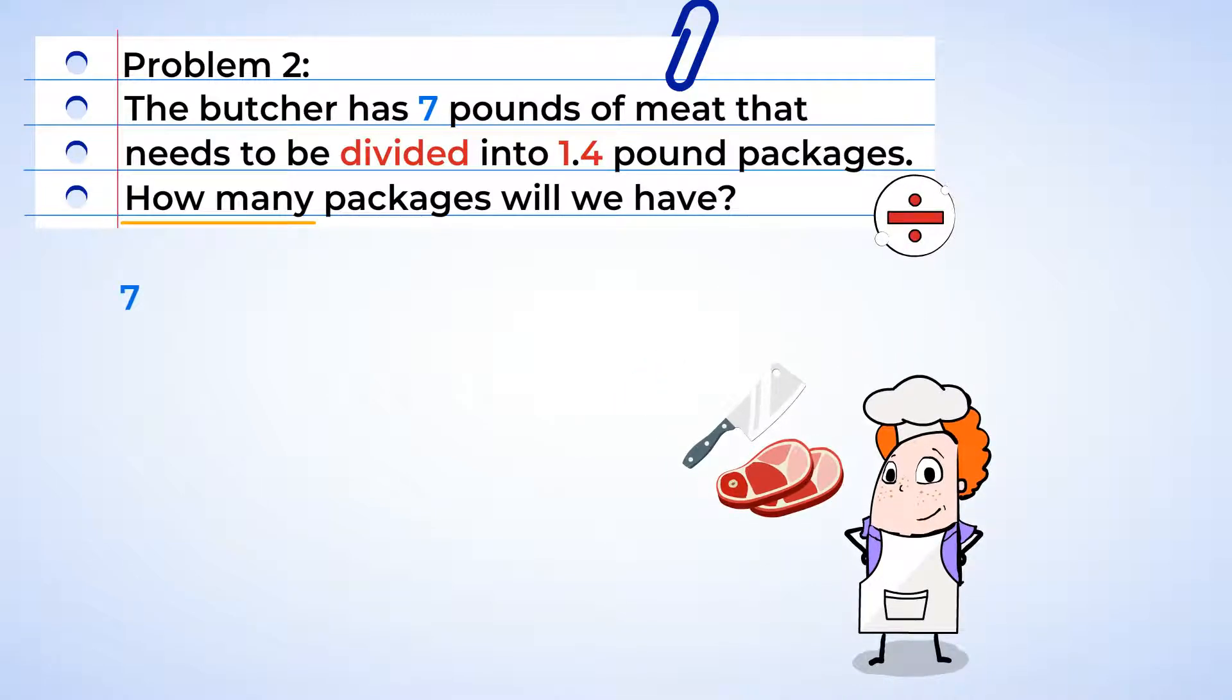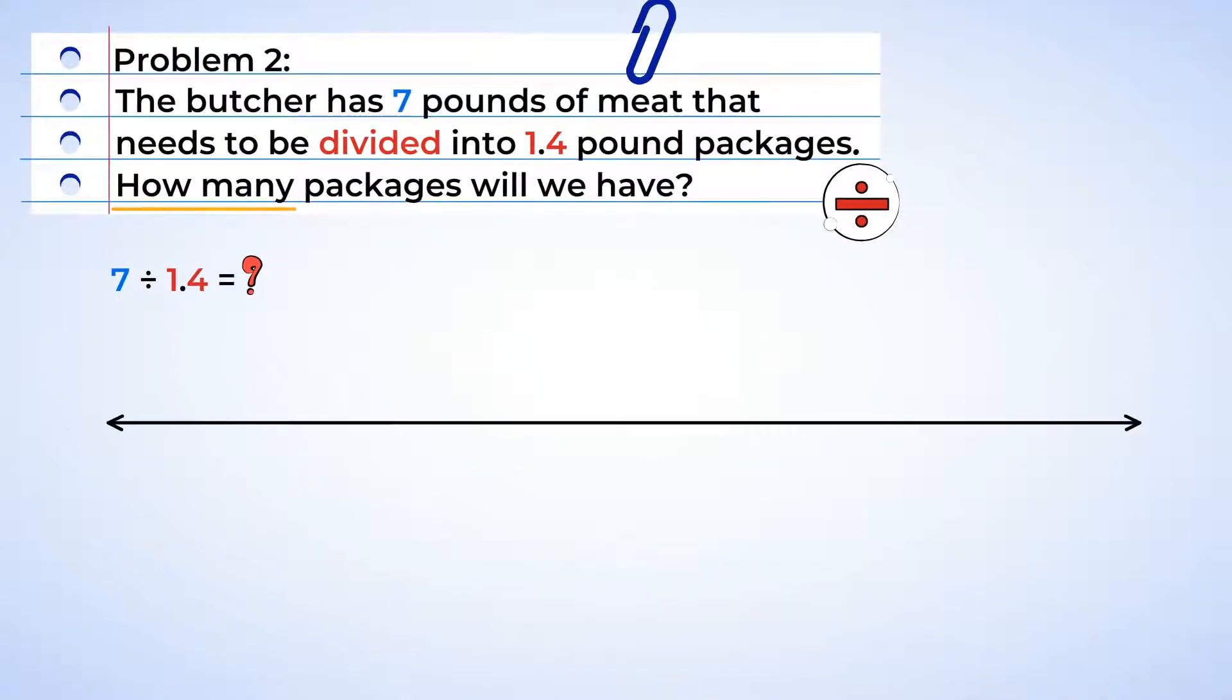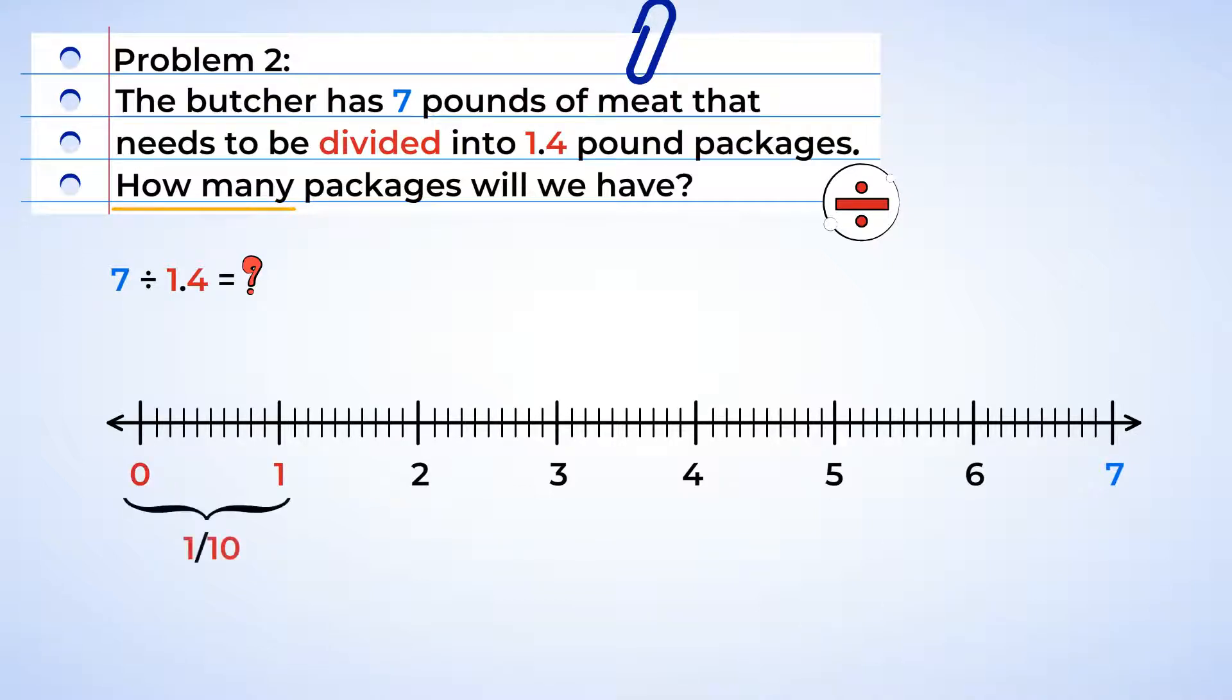We have seven wholes that need to be divided into groups of one and four tenths. We have a decimal in the divisor here. Let's use a number line to help us. Now, our number line extends from zero to seven, and we will split the distance between every two whole numbers into ten parts. So, each part will represent one tenth.